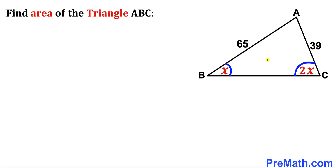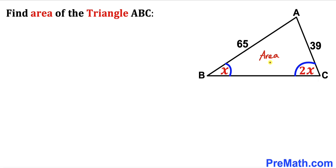Welcome to pre-math. In this video we have got a scalene triangle ABC such that its side length AB is 65 units, side AC is 39, angle ABC is x, angle ACB is 2 times x, and our task is to calculate the area of this triangle ABC.